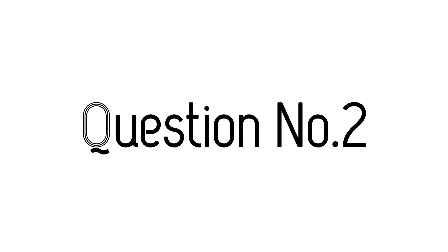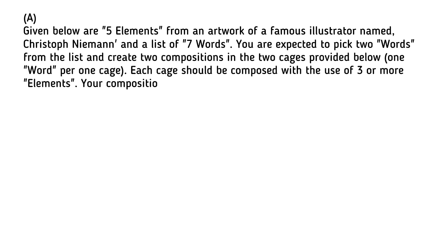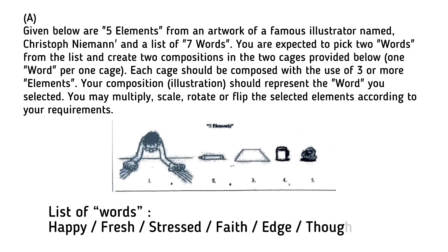The second main question focuses on how you identify elements in visuals and use them to create compositions. In 2021, students were provided with illustrated elements created by an artist and a list of words. The task is to select two words from the list and, for each word, use three or more of the illustrated elements to create a composition representing that word. You can adjust elements by multiplying, scaling, rotating, or flipping them as needed, within the associated space provided for each word.